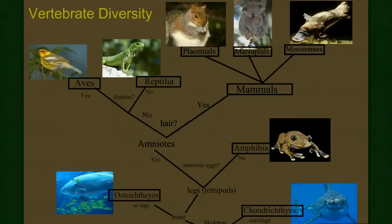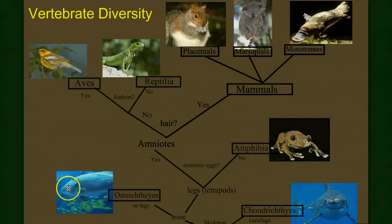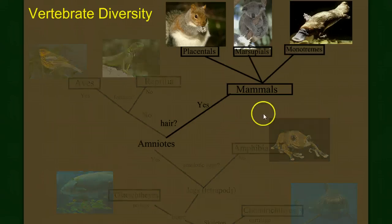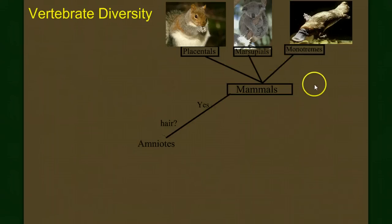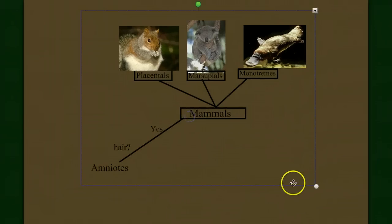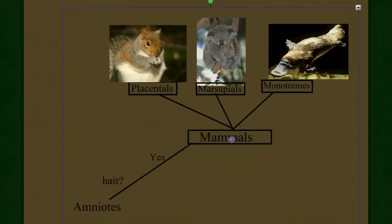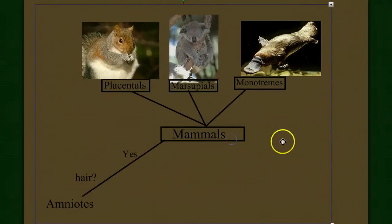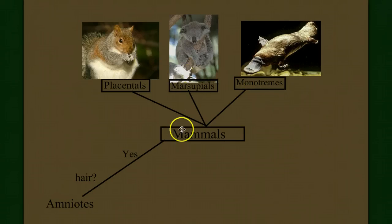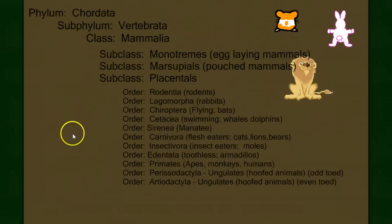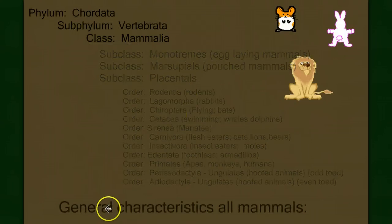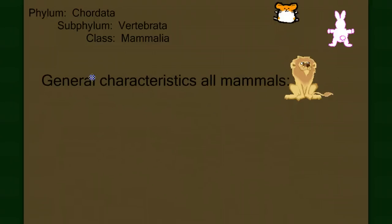Welcome to our last video in our series on vertebrate diversity. In this video, we're going to focus on our last class in the vertebrate subphylum, the mammals. One of the interesting things we're going to do in this group is look at the three subclasses of mammals: the monotremes, the marsupials, and the placentals. But before we do that, let's focus on the general characteristics of all mammals.